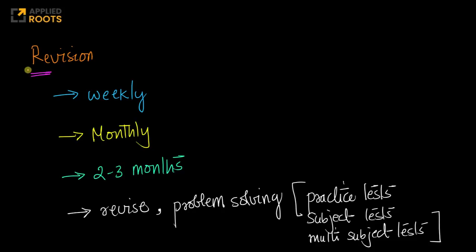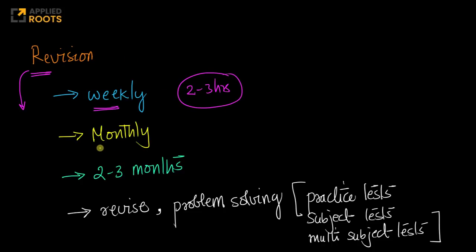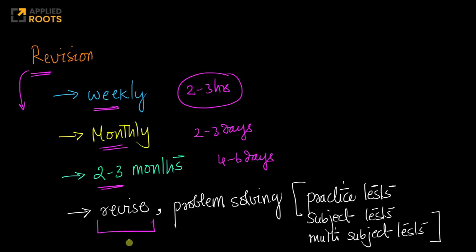Coming to revision — this is a very often asked question. We strongly recommend students to follow this method: do a weekly revision. At the end of every week, spend two to three hours going through all the concepts you learned that week. Similarly, have a monthly revision — at the end of each month, spend two to three days revising everything learned that month. At the end of every two to three months, spend four to six days revising everything from that period. When I say revise, you revise through your notes, and revision through problem solving is one of the best methods.